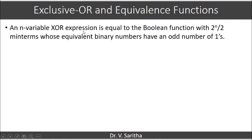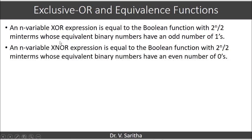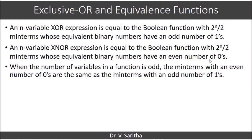When n variables are XOR'd, the result equals the Boolean function with 2^(n/2) minterms whose equivalent binary numbers have an odd number of 1s. For XNOR of n variables, it involves 2^(n/2) minterms with an even number of 0s. When n is odd, the minterms with an even number of 0s are the same as the minterms with an odd number of 1s, so XOR and XNOR operations become equal.